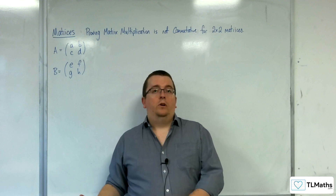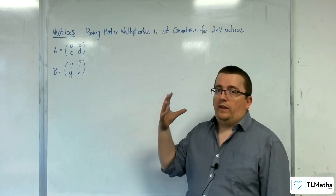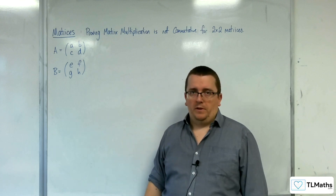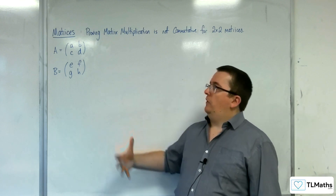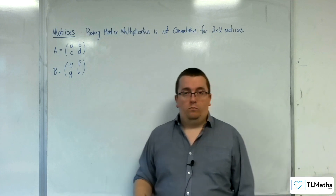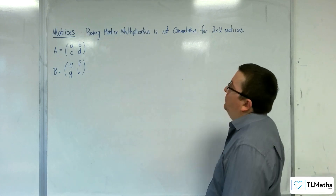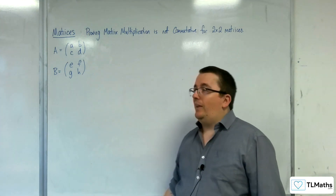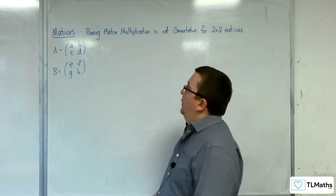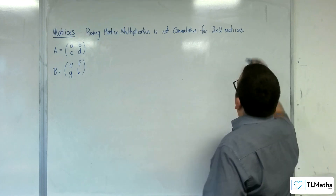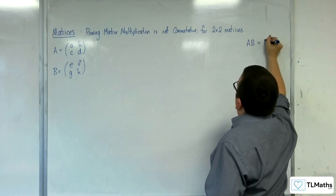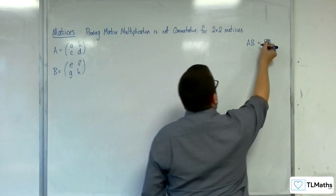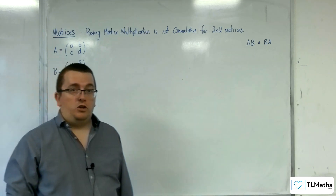We've seen an example to show that matrix multiplication is not commutative. But it's best if we could also prove that that is the case. So we're going to prove this for 2 by 2 matrices. Here are my two general matrices, A and B. I want to prove that AB is not equal to BA, and show that that is the case in general.